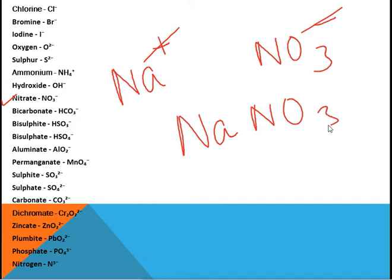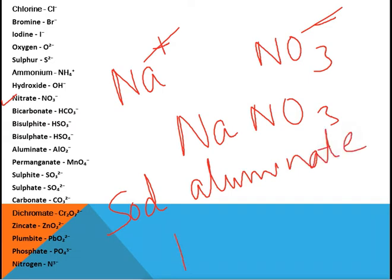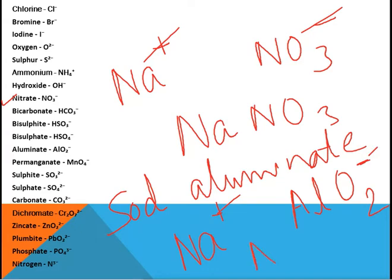Suppose we want to write the formula for sodium aluminate. The formula for sodium ion is Na⁺ and aluminate ion is AlO₂⁻. We have equal and opposite charges, so they cancel out, and the final formula is NaAlO₂. This is our sodium aluminate.